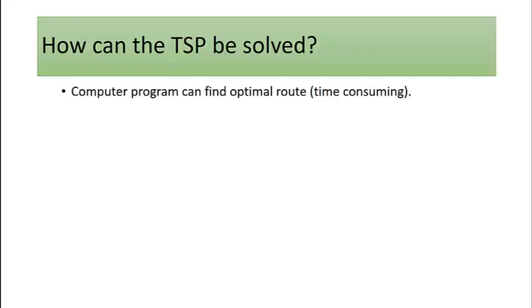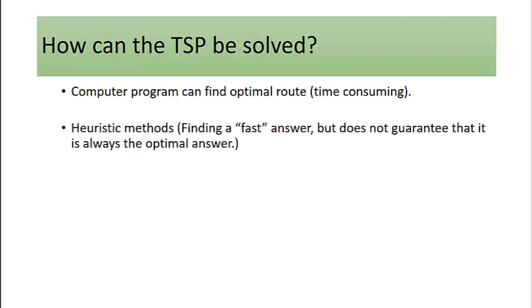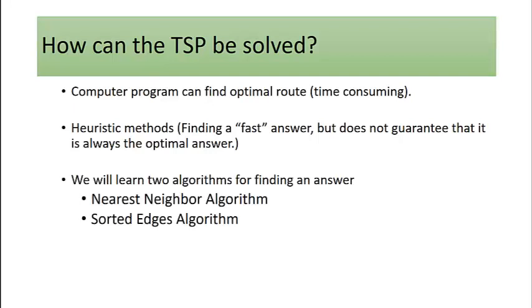A computer program can find an optimal route without being quite as time consuming. But what if we don't have one of those available to us? Instead, we're going to take a heuristic method. We're going to find a fast answer that's not guaranteed to always be the optimal answer. What we're going to do in our next video is to learn two algorithms for helping us find a good answer, even if it's not the best answer. And I'll see you there. Thanks, guys. Bye.